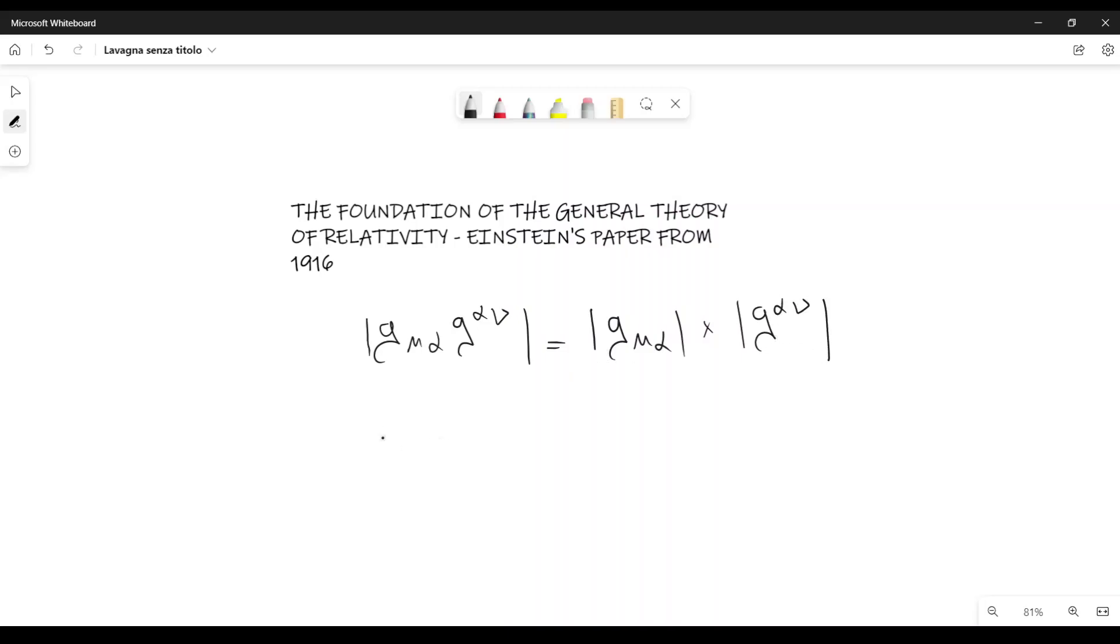On the other hand, we also know that the determinant of G mu alpha times G alpha nu is equal to the determinant of delta nu mu, which is equal to 1. Therefore, it follows that the determinant of G mu alpha times the determinant of G alpha nu is equal to 1.